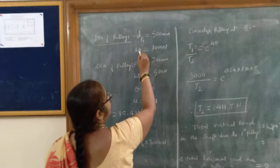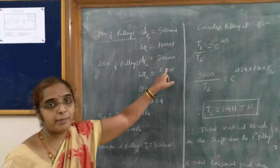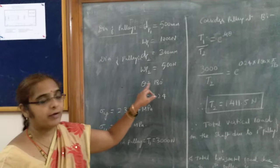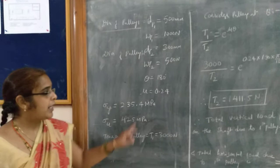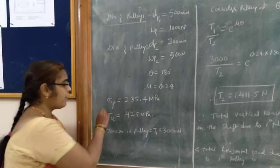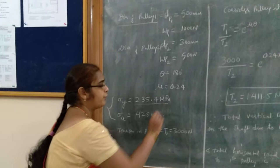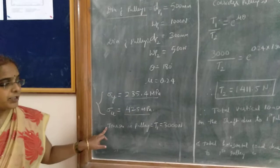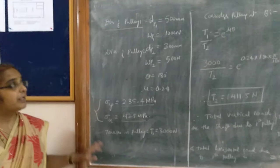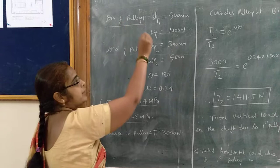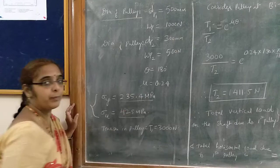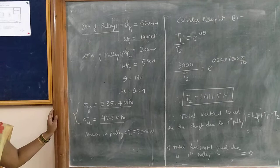The diameter of pulley 1 is 500 mm and its weight is 1000 N. The diameter of the second pulley is 300 mm and its weight is 500 N. The angle of contact is 180 degrees for both pulleys, and the coefficient of friction mu is 0.24. The shaft material has a yield strength of 235.4 MPa and an ultimate strength of 425 MPa. The tension in the first pulley T1 is given as 3000 N.